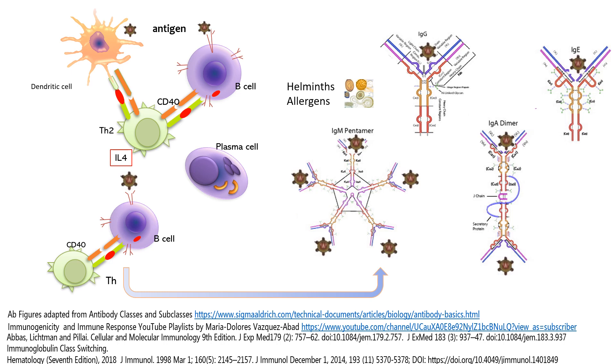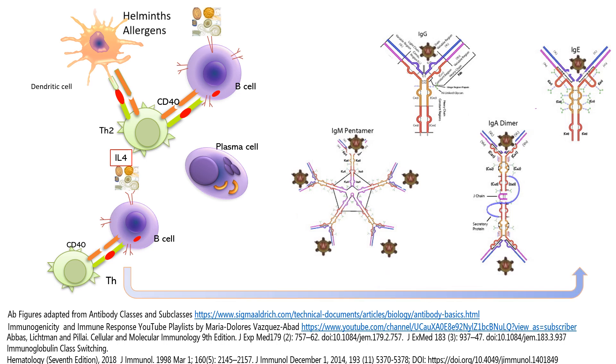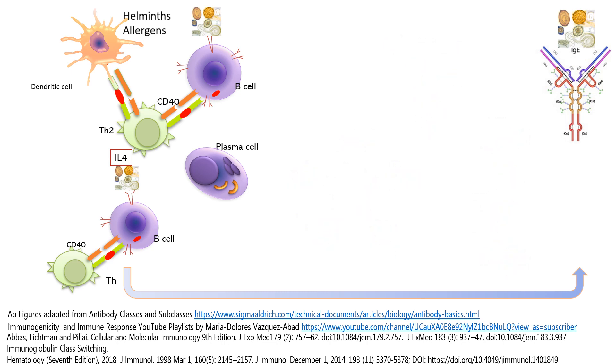When the antigen happens to be an allergen that causes an allergic response or a helminth, which are parasitic worms, the response that will be driven is a switch to IgE because this is the way that our body deals with allergens and helminths.